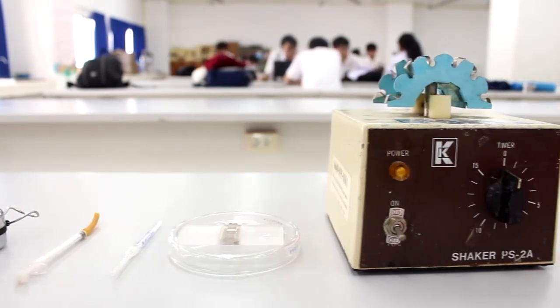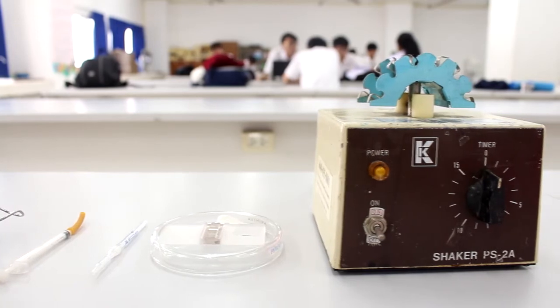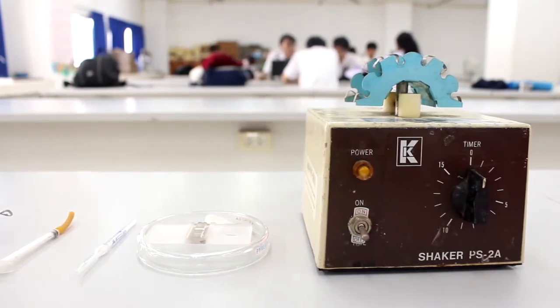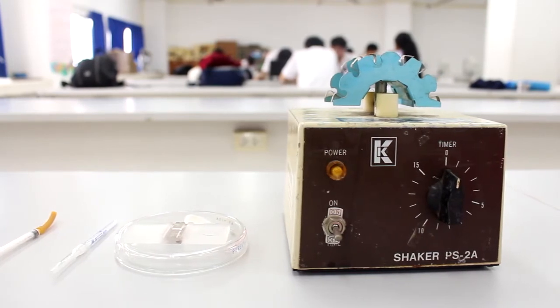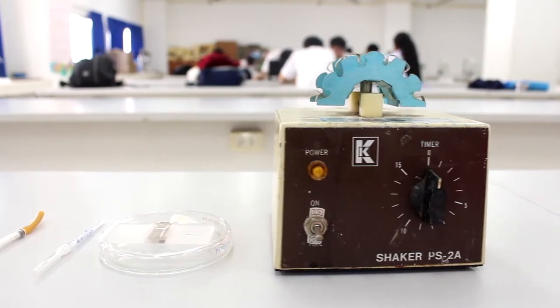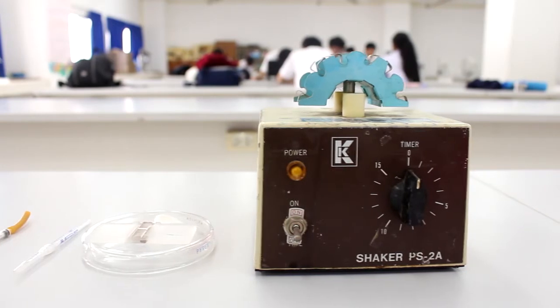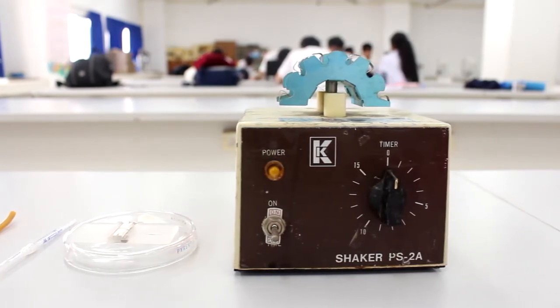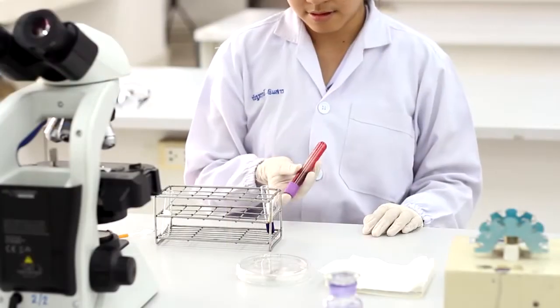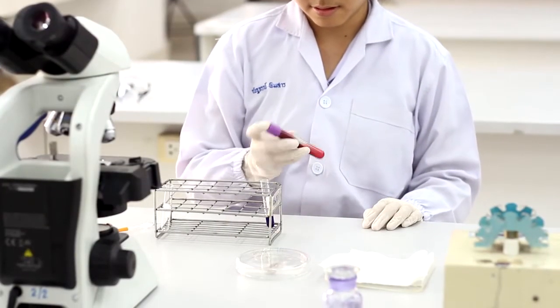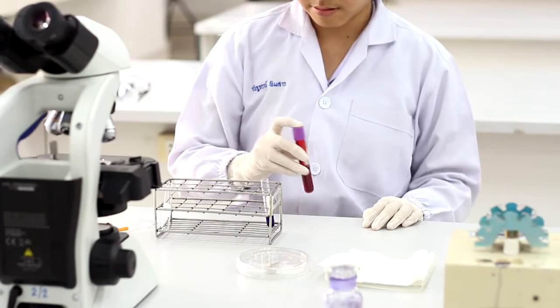The manual cell count uses a counting chamber with the most common one being the Levy chamber with improved Neubauer ruling. It is composed of two raised surfaces each with a 3 by 3 mm square counting area. Each area is made up of nine grids, composed of nine one by one mm squares.